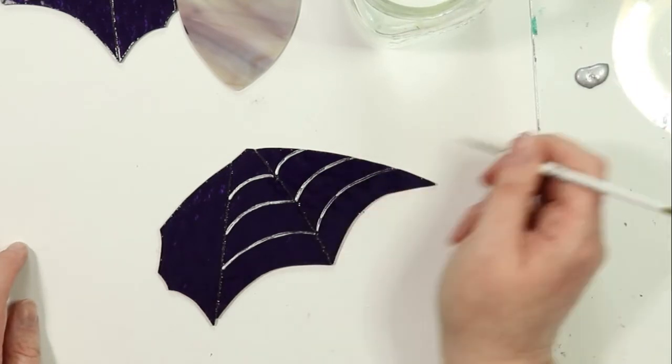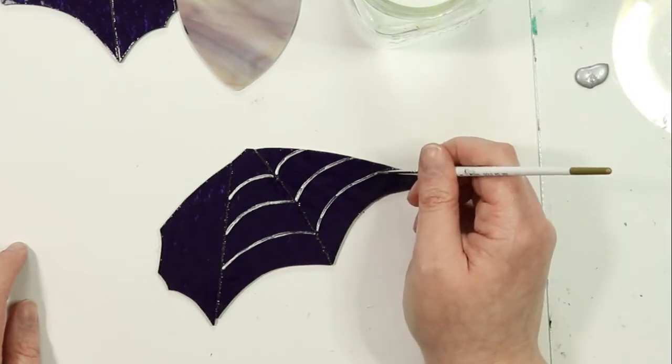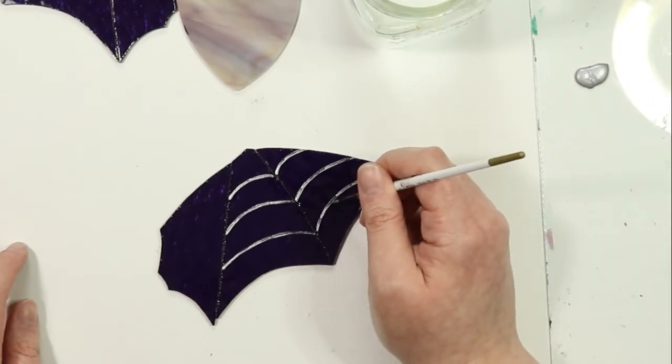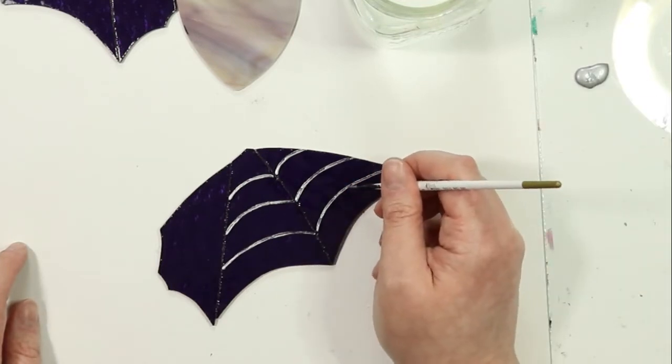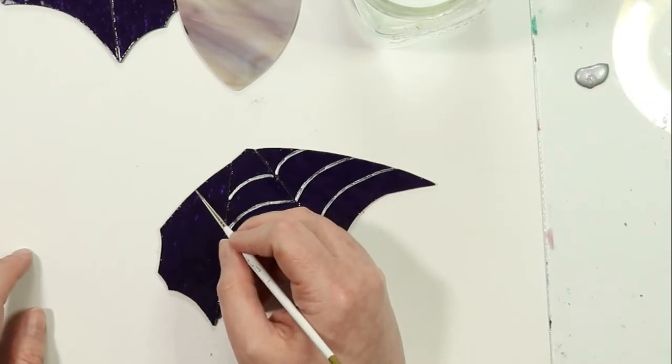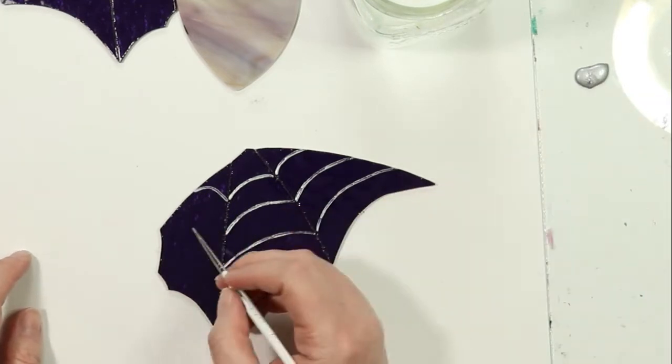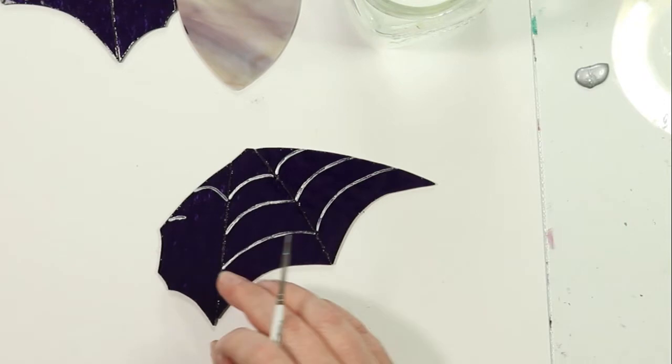Then use a paper towel to blot the excess water out of your brush and then you can just keep working on your project. Now the really awesome thing about these particular paints is that you can let them air dry or you can choose to bake them onto the glass.